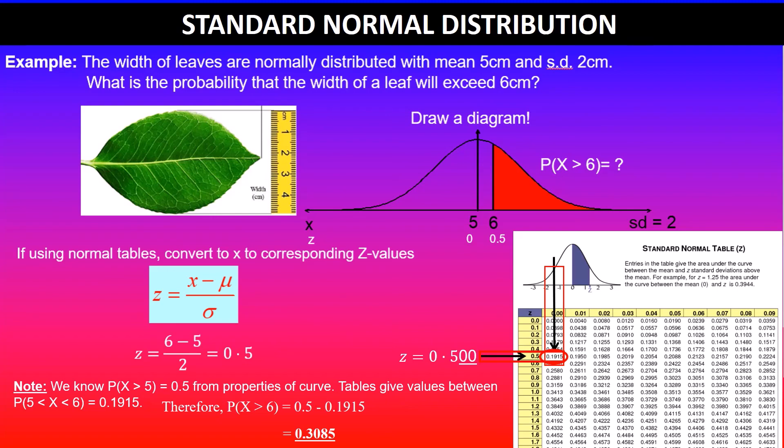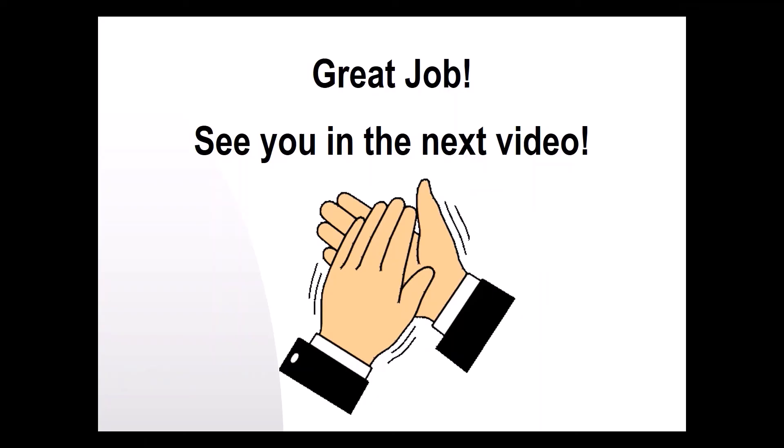Therefore, the probability that the width of a leaf will exceed 6cm is 0.3085. I hope this makes sense. Pause the video and try this yourself. Thanks for watching!